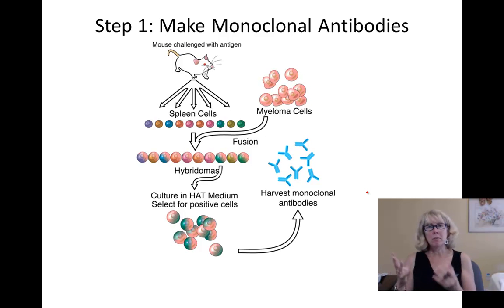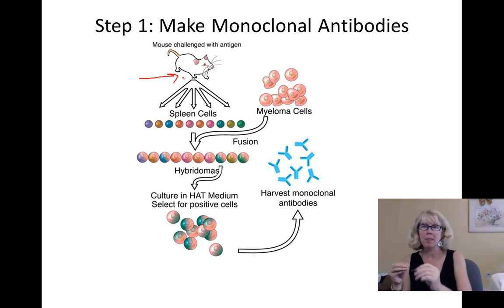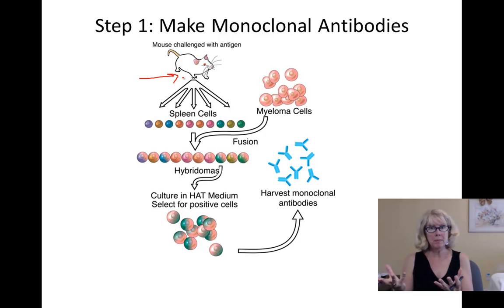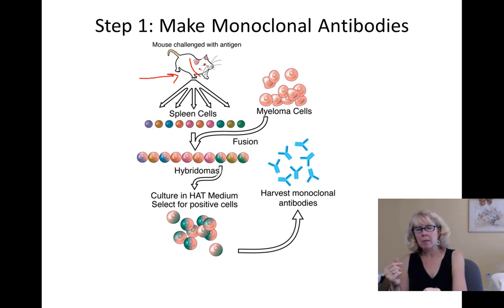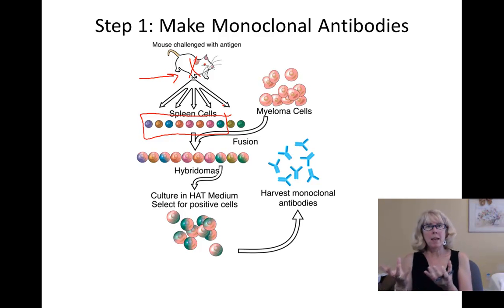The first step is to make the instructions for an antibody. Antibodies vary widely based on what they're attached to, and we can't give people Ebola to have them make antibodies, so instead we give a broken-down piece of Ebola — just the glycoproteins — to a mouse. When you give the glycoproteins to the mouse, the mouse makes antibodies to it. We then sacrifice the mouse and take the spleen cells that made these antibodies. They've now been sensitized to the Ebola glycoprotein and they have the DNA instructions to make the antibody.